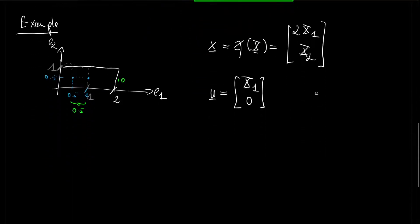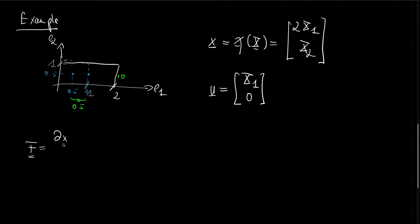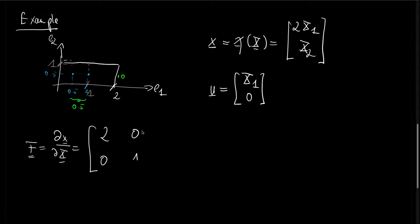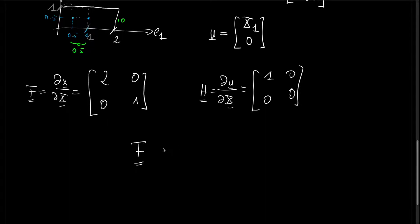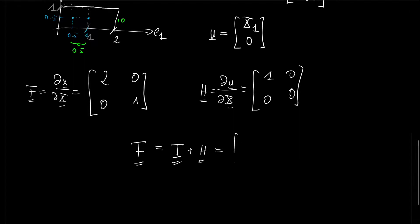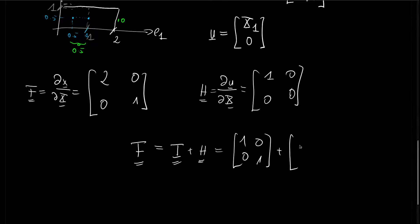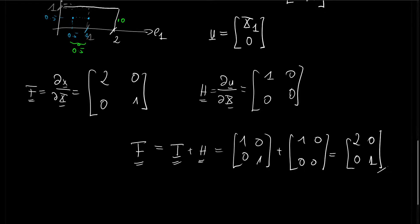Now let us derive the deformation gradient and displacement gradient. The deformation gradient F is the derivative of the spatial configuration with respect to the reference configuration: differentiating with respect to X1 gives [2, 0], and with respect to X2 gives [0, 1], so F is the matrix [[2, 0], [0, 1]]. The displacement gradient H is the derivative of the displacement with respect to the reference configuration: with respect to X1 gives [1, 0], and with respect to X2 gives [0, 0], so H is [[1, 0], [0, 0]]. We can verify the identity F = I + H: the identity matrix [[1, 0], [0, 1]] plus H [[1, 0], [0, 0]] equals [[2, 0], [0, 1]], which is exactly F.